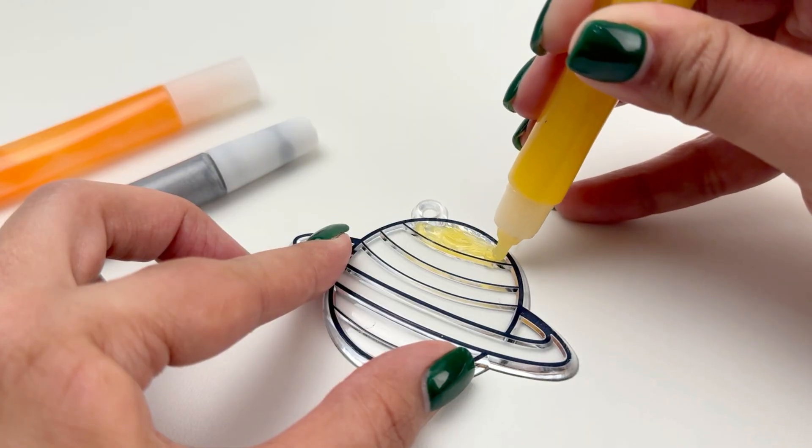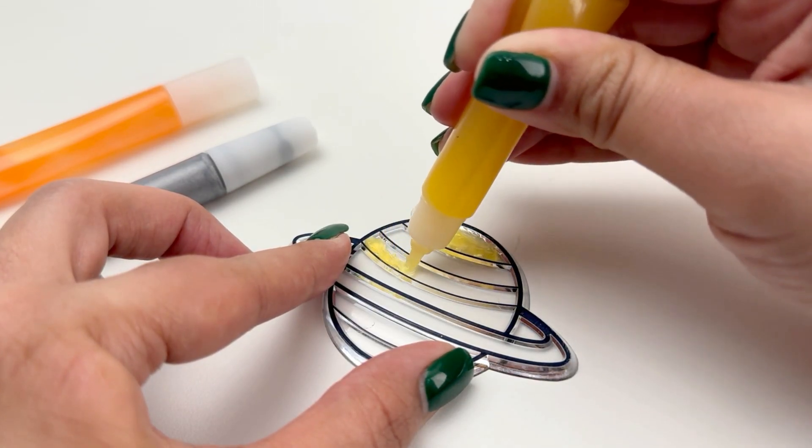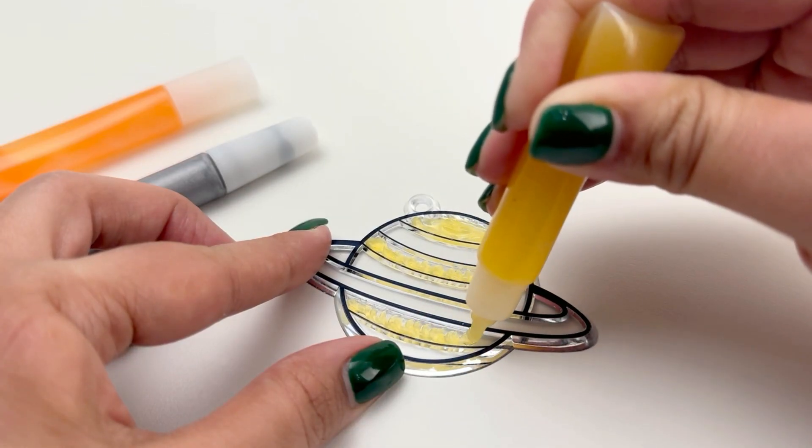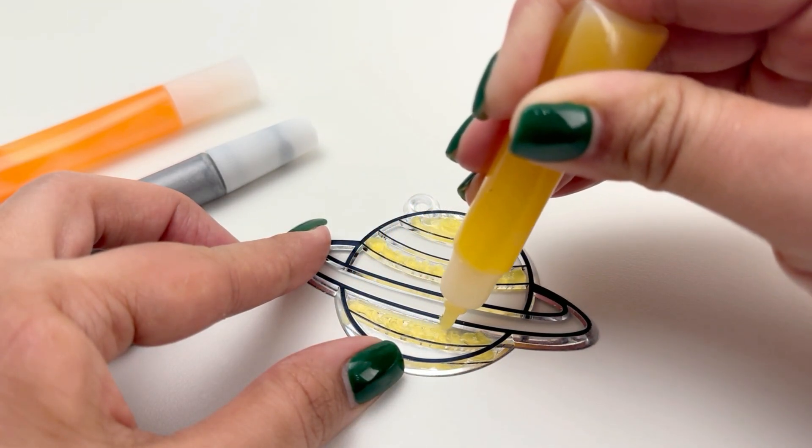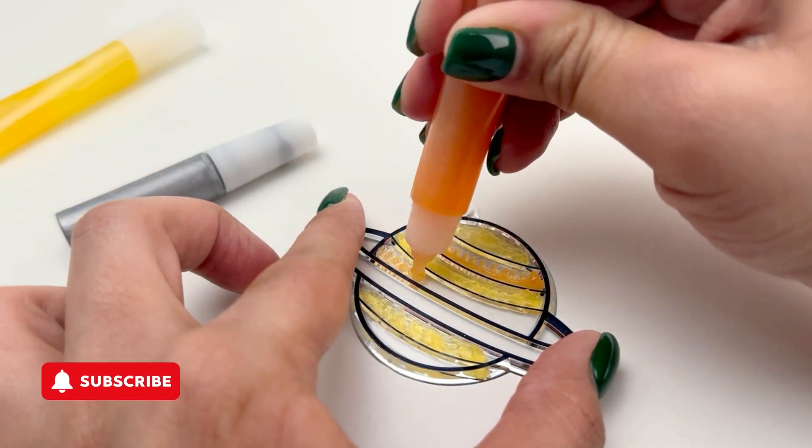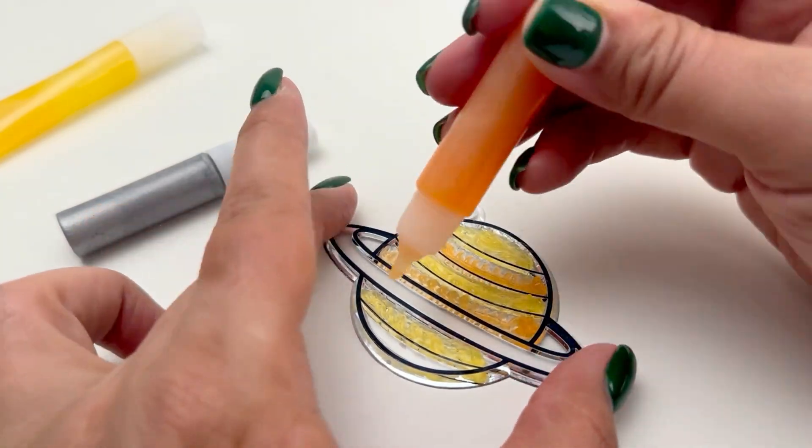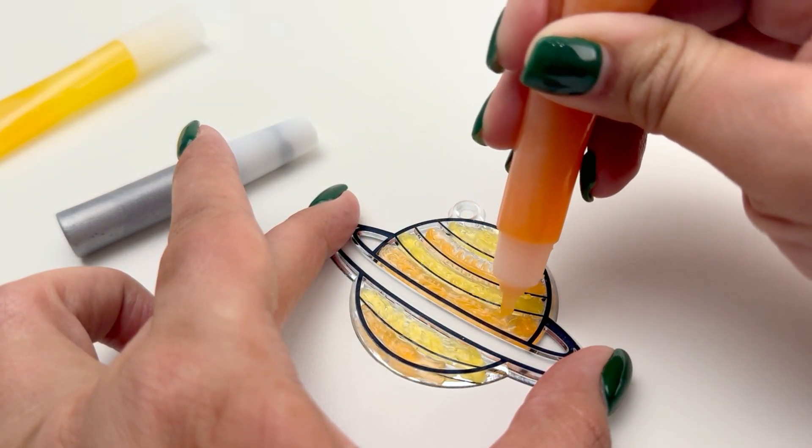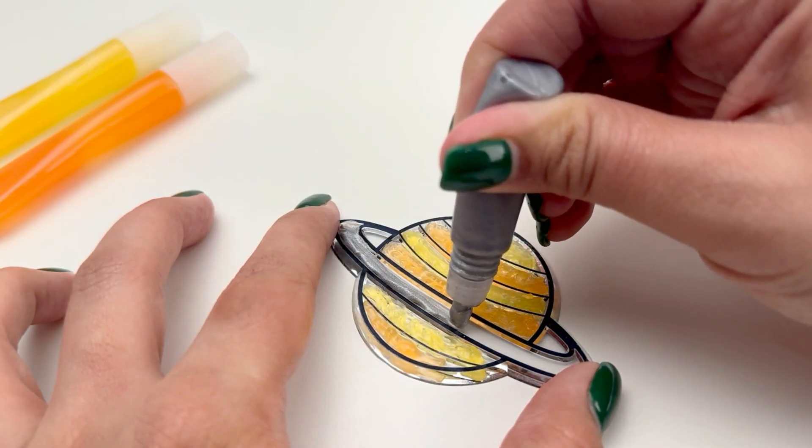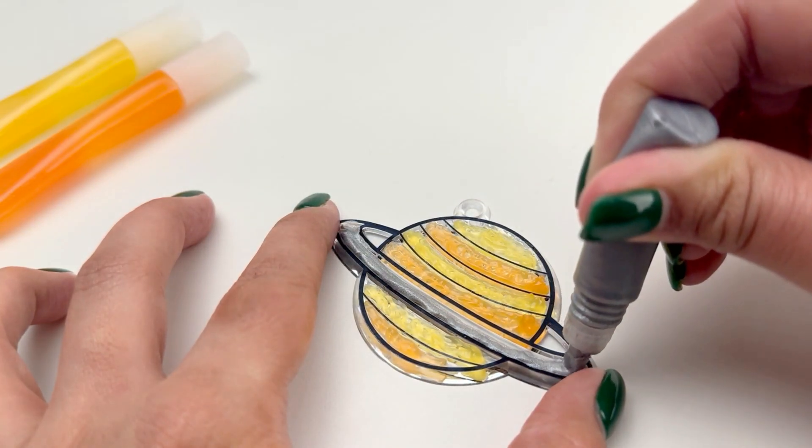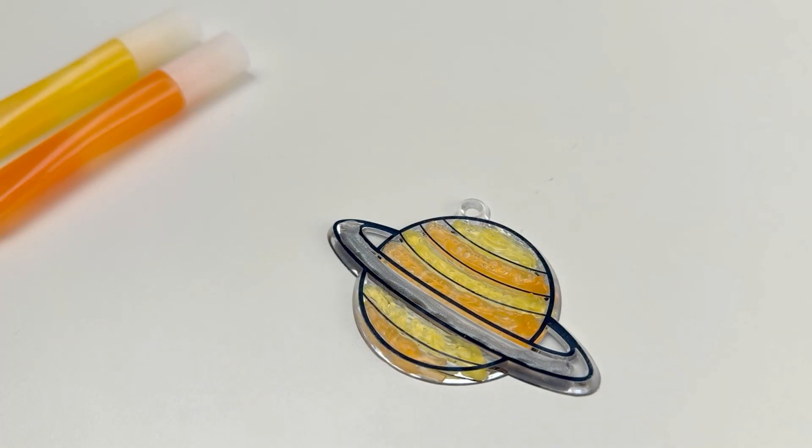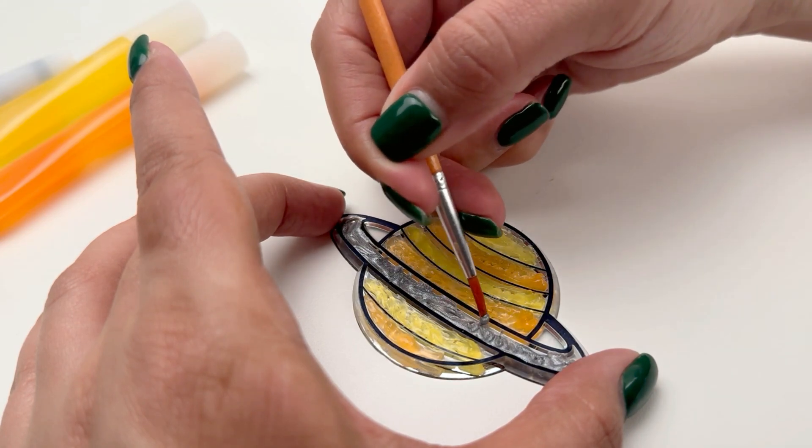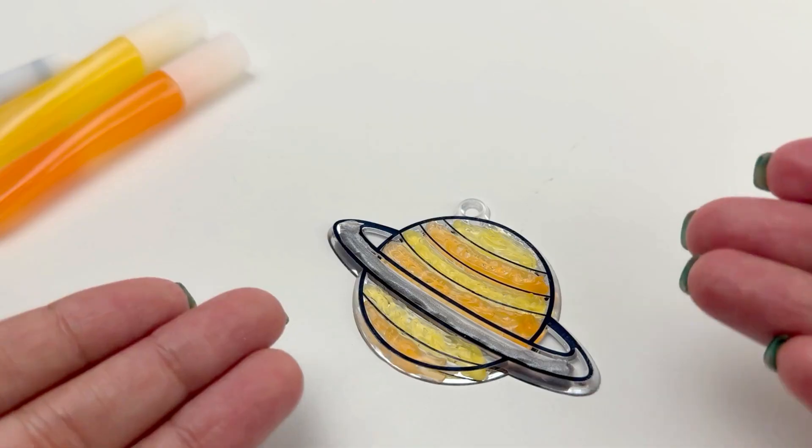Saturn is also a gas giant made up of hydrogen and helium. Saturn's rings are its most famous features and are made up of countless pieces of ice and rock. Gas clouds, storms and extreme winds give Saturn a striped appearance in colors ranging from yellow to orange to gray. Wow! Look at those rings. Our Saturn got its color back.